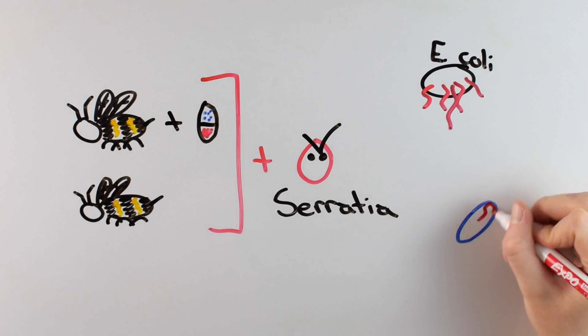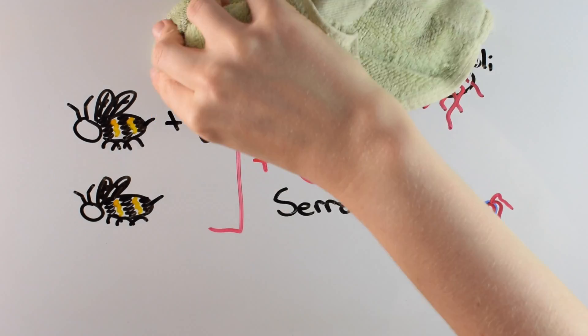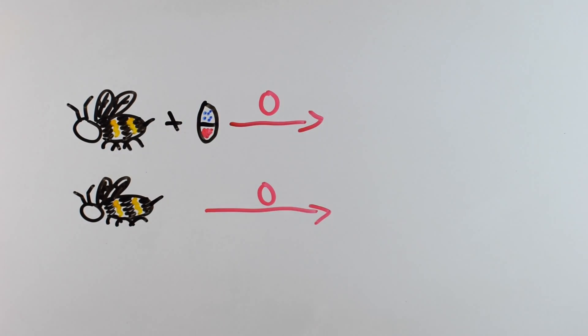Serratia is in the same family as E. coli and Salmonella. Neither group of bees were cool with being infected, but about 70% of the tetracycline-treated bees died after 5 days, whereas only about 25% of the untreated bees died.